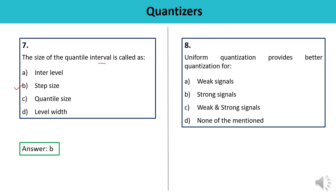Question 8: Uniform quantization provides better quantization for — weak signal, strong signal, both, or none? The signal-to-noise ratio is worst for weak signal levels. Whenever the signal is weak, SNR will be worst. It means uniform quantization provides better quantization for high-level signals — that is, strong signals. The answer is B.